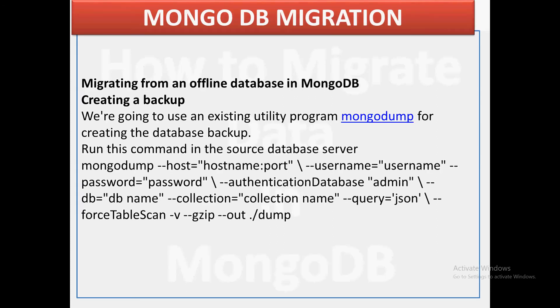There are two types of migration. In the case of offline migration, we need to create a backup. We have a utility called MongoDump for this purpose.